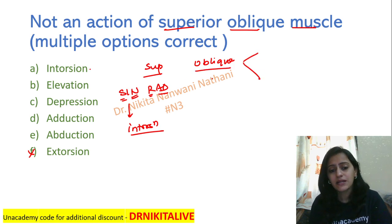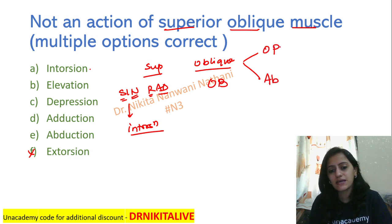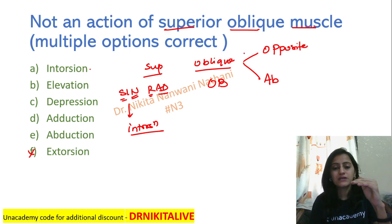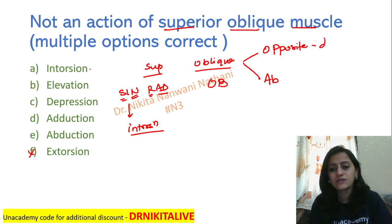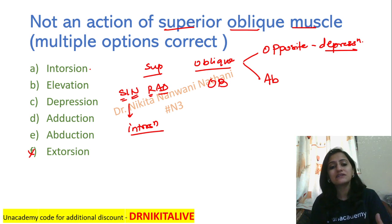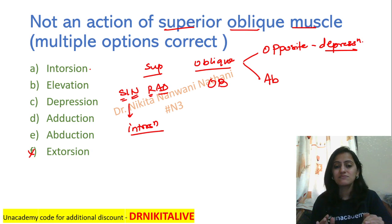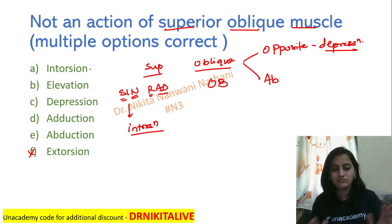For the oblique muscles, remember the mnemonic: OB is OP, OB is AB. OP means obliques have the opposite action to their name. So superior oblique will not take the eyeball superiorly but inferiorly — superior oblique causes depression, not elevation. Likewise, inferior oblique will do elevation, not depression. The recti muscles are straight — rectus means straight — so they will do the straight action as their name.